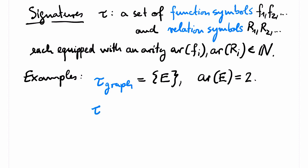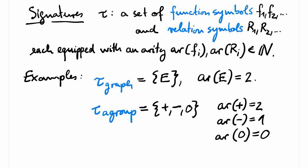The signature of abelian groups consists of a binary function symbol for the addition in the group, a unary function symbol for the additive inverse, and a function symbol of arity 0 for the identity in the group.